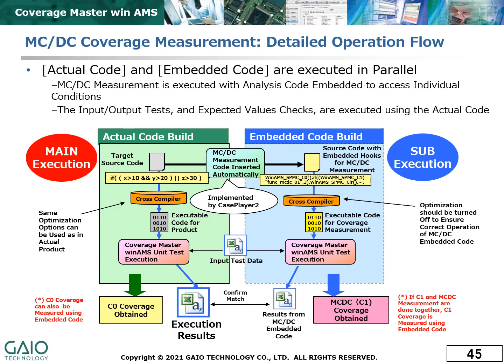This diagram shows a detailed description of the process. The main execution uses the unmodified target program and thus should use the same compiler optimization options as the actual target. Conversely, the embedded code execution should be done with compiler optimization off to ensure that the hook code operates as intended. The comparison of the two sets of results will prove that the behavior of both programs is identical.